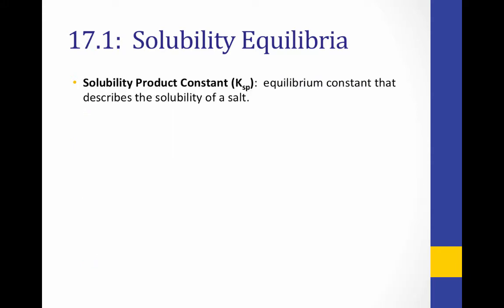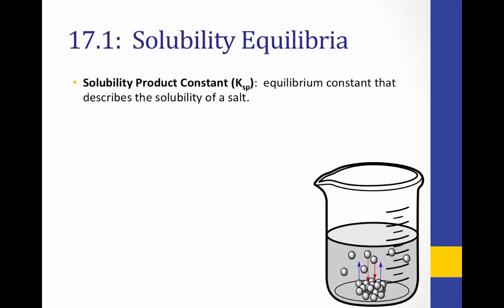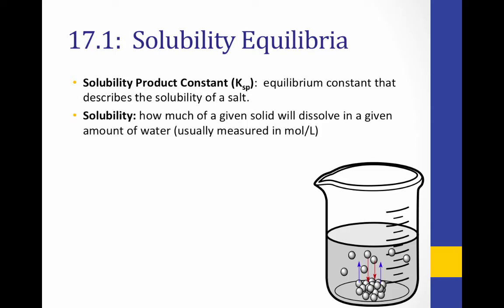We can describe the equilibrium system using a K value. This is another KEQ — here we call it KSP because it is specifically the KEQ for solubility. SP stands for solubility product, so KSP is the solubility product constant. This is the equilibrium constant that describes the solubility of a salt. Solubility, recall, is how much of a given solid will dissolve in a given amount of water.